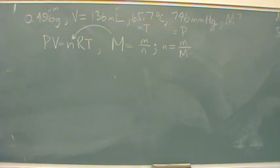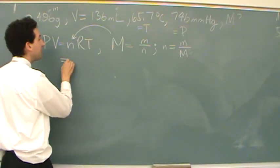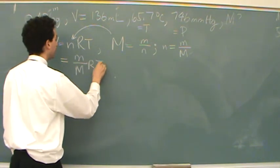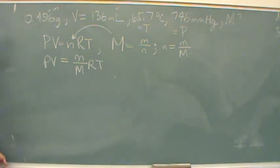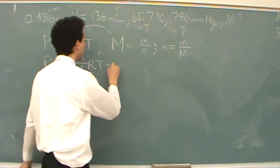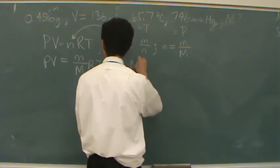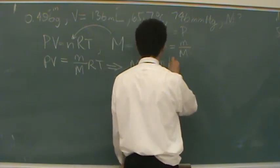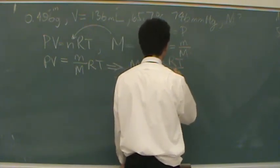So I'm going to substitute that in for n, because we don't have n. And so now PV is m over capital M RT. Now I have everything I want in here, and I have the capital M molar mass, which is what I want to solve for. So let's solve for that first, so we know which formula we're using.